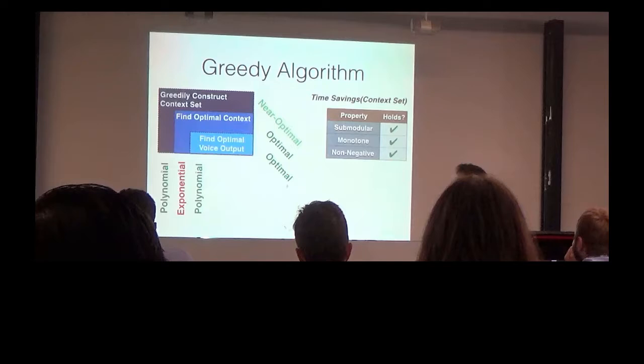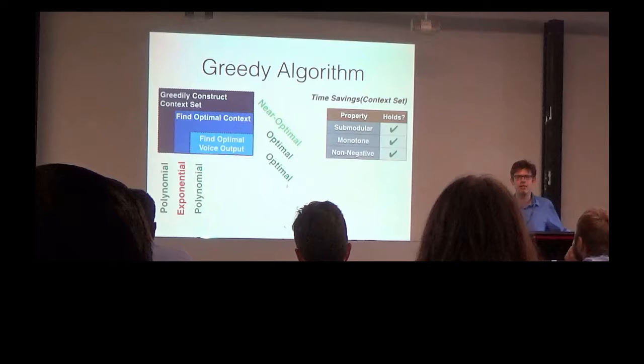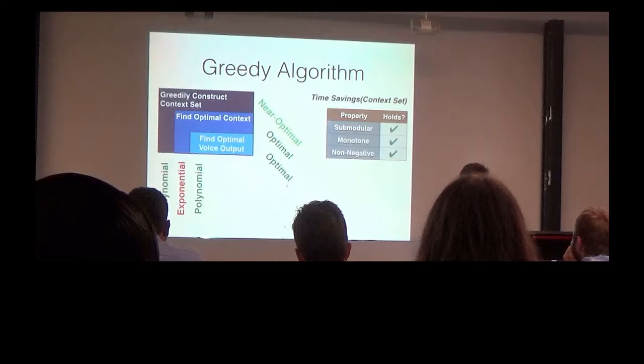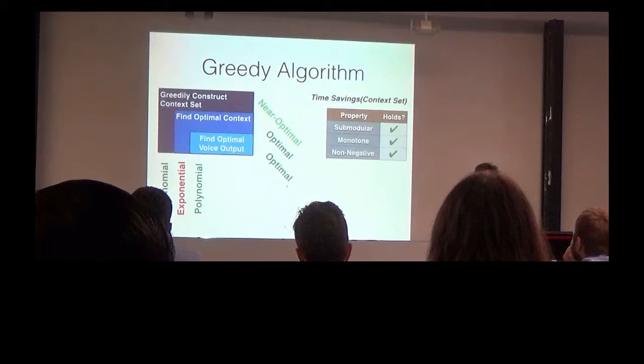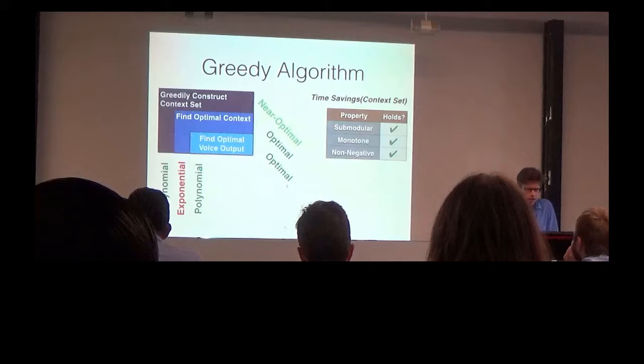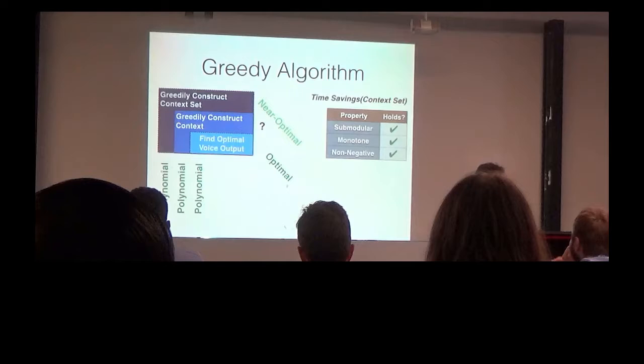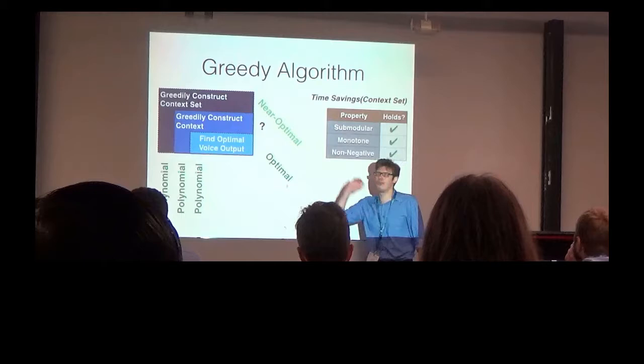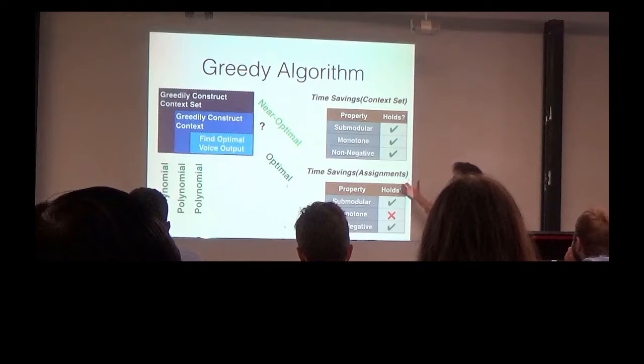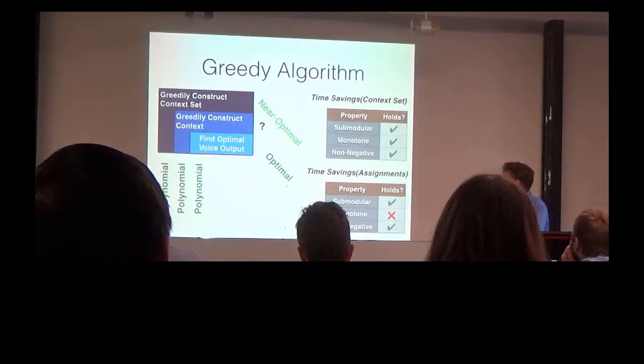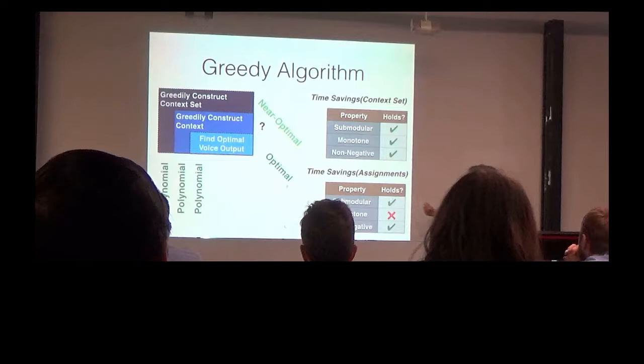Still, one problem remains, because in order to really select context at each step, I would have to compare all possible candidates. There can be too many of those context candidates. So, what I could also do is to explore the fact that the context basically corresponds to a set of assignments from attributes to value remains that I select. This means that I can also construct the context readily by selecting one assignment after the other one, and then doing that, I have polynomial complexity everywhere. The only question is, how does the quality of doing that relate to the optimal quality? And analyzing the time savings in speaking time that is created by adding one more context, one more assignment to a context, turns out that this function is also sub-modular.